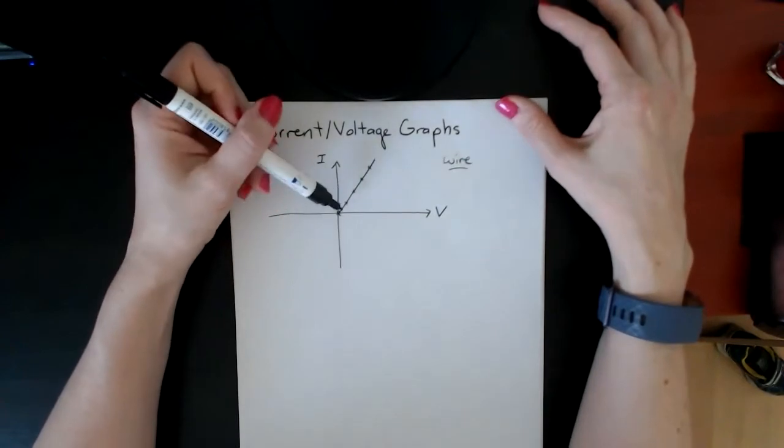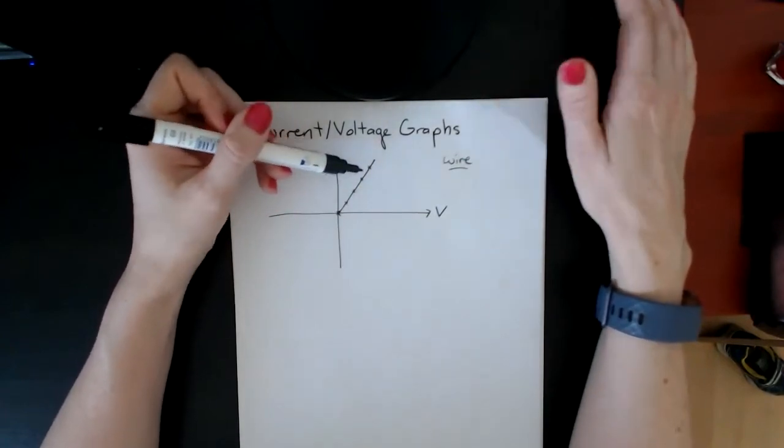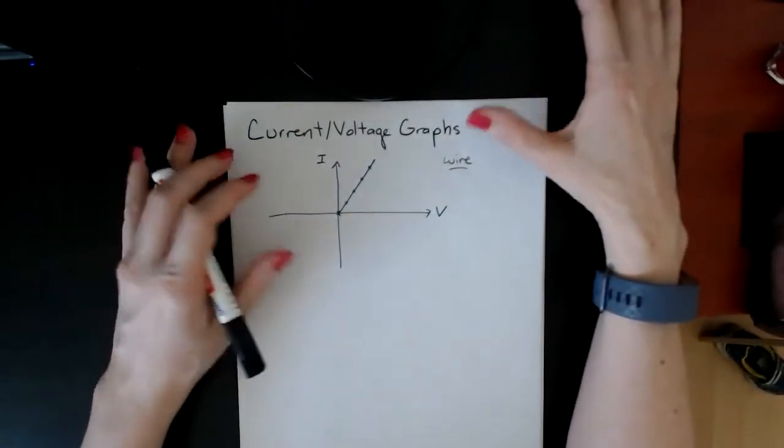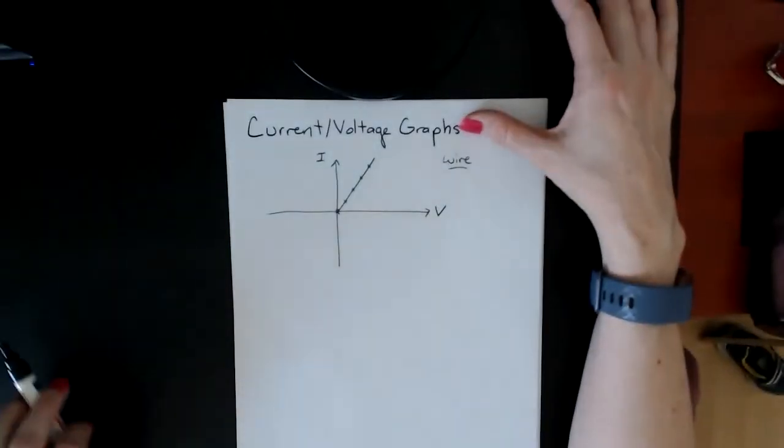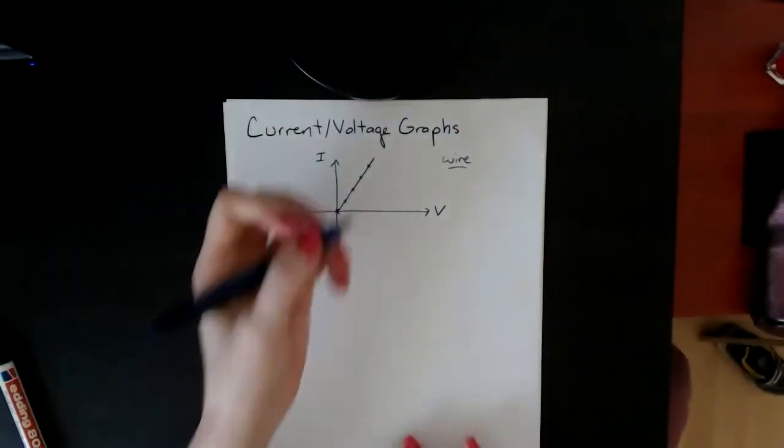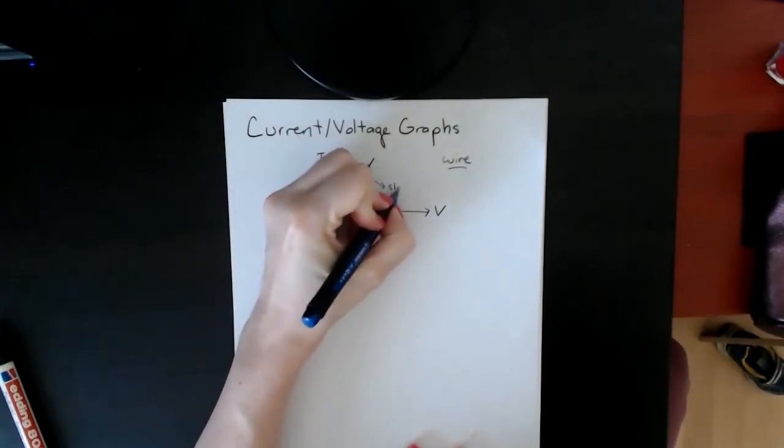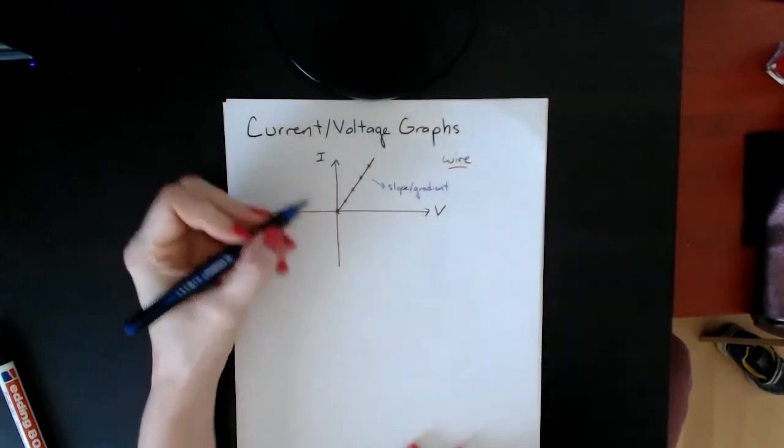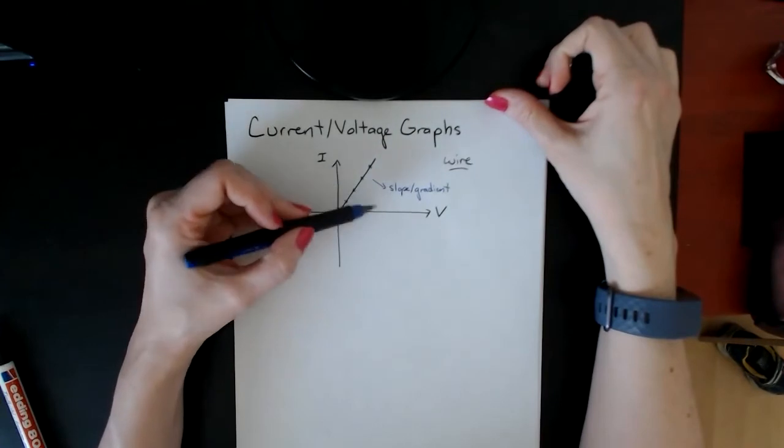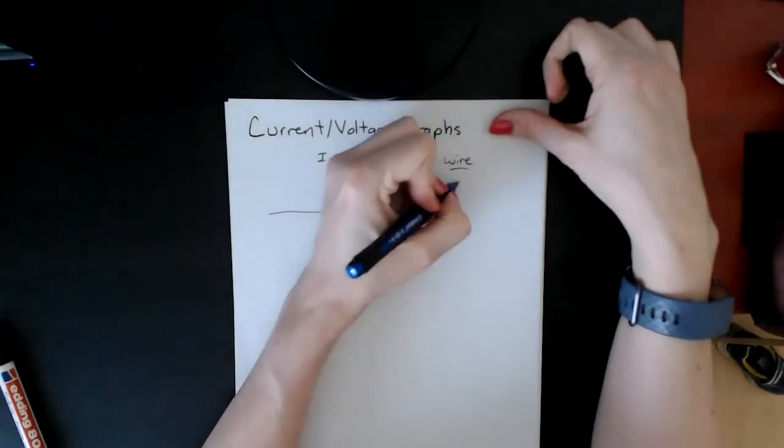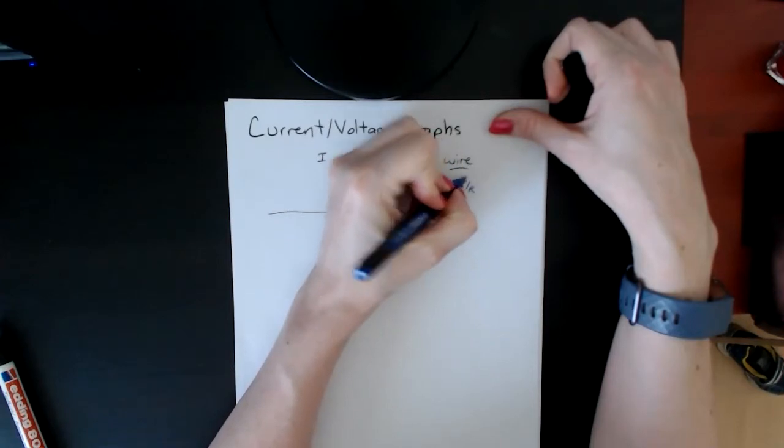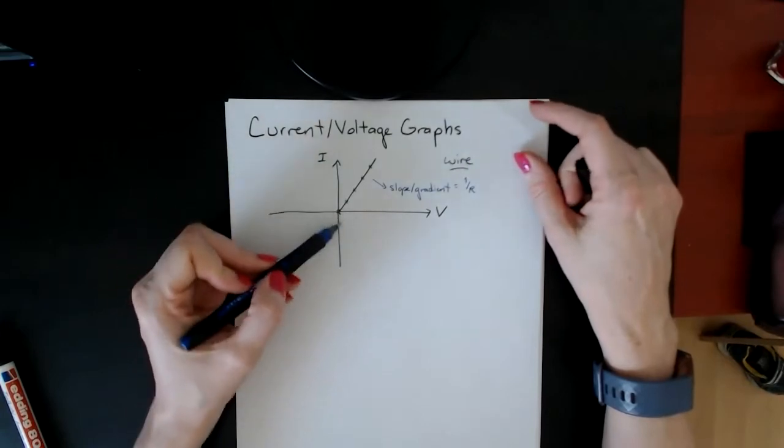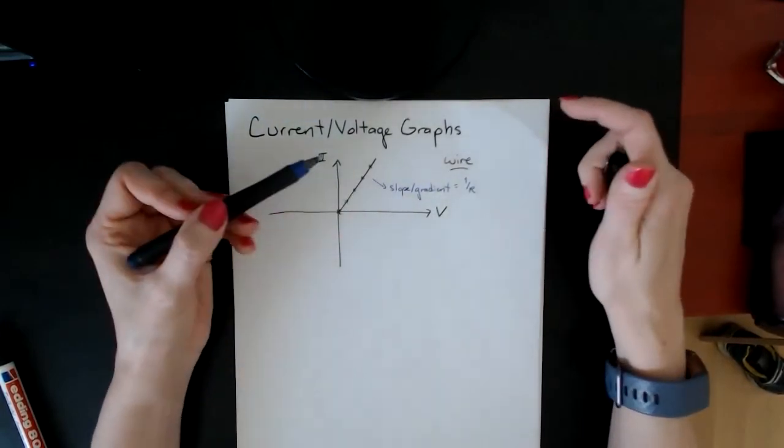This line tells you a lot of information about the actual relationship between current and voltage in any circuit. Here we're looking at a wire; I'll show you some other ones in a bit. First, you want to look at the slope or gradient. If you take the slope or gradient—which would be current divided by voltage—that is actually equal to one over the resistance. If they give you the one where voltage is the y-axis and current is the x-axis, then the slope or gradient equals the resistance.